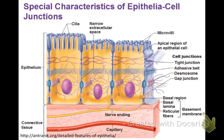Cellular connections are really important. There are three major types to discuss, and that will bring the lesson to a conclusion. Although these connections are not technically organelles, they're related to the cytoskeleton and extracellular components. Connections between cells serve two major functions: adhesion between the cells and communication between the cells.